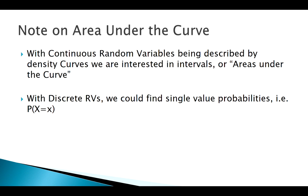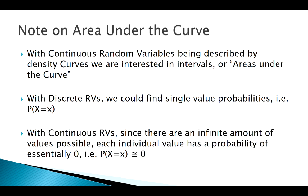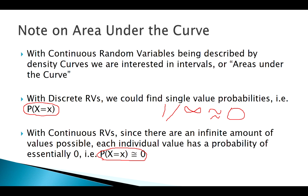With discrete random variables we found cumulative probabilities — less than, greater than, equal to. But with continuous random variables there are an infinite amount of values. With discrete, I can assign probabilities to specific outcomes. But with an infinite amount of outcomes, if I divide one by infinity, that's essentially zero. Since we have an infinite amount of outcomes, it's impossible to assign probabilities to every single one — in the continuous case, probabilities of single values are essentially zero; they're negligible.